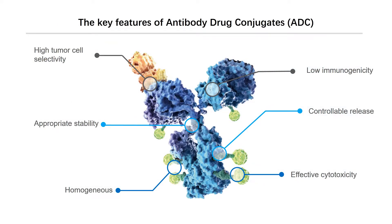After understanding the mechanism of ADC, it is not hard to explain the key features an excellent ADC should have. For the antibody part, high tumor cell selectivity ensures specificity and low off-target toxicity. Appropriate stability is needed to ensure adequate ADC molecules reach the tumor site rather than being degraded during circulation. The stability of the linker molecule should be controllable: sufficient linker stability is necessary to enable the conjugate to circulate in the bloodstream for an extended period before reaching the tumor site without prematurely releasing the free drug and potentially damaging normal tissue. Once the ADC is internalized within the tumor, the linker should be labile enough to efficiently release the active free drug.